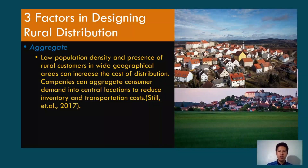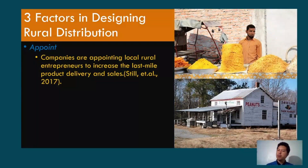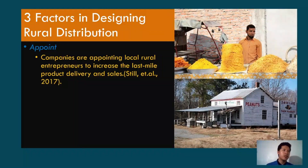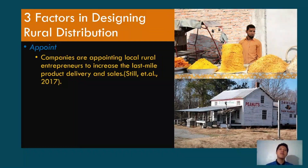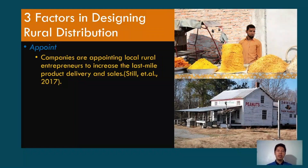The third factor is appointing local rural entrepreneurs to increase the last-mile product delivery and sales. You can partner with small-time traders so that products are delivered to the most remote parts of the area without incurring the full cost yourself. By appointing and partnering these small-time merchandisers, you avoid the high cost of delivering to very remote locations — you can partner those who are willing to take on that level of business.